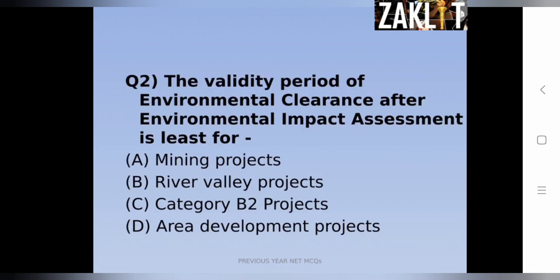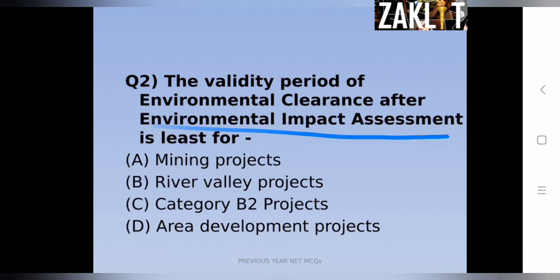The second question: the validity period of environmental clearance after environmental impact assessment (EIA) is least for which of the following projects? The options are mining projects, river valley projects, category B2 projects, and area development projects.